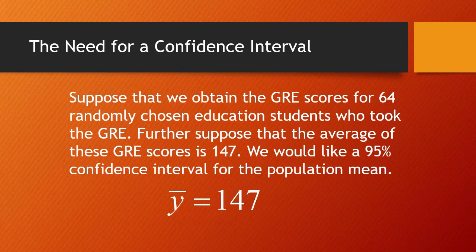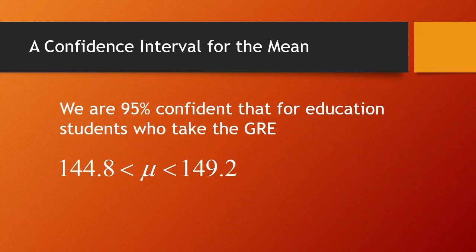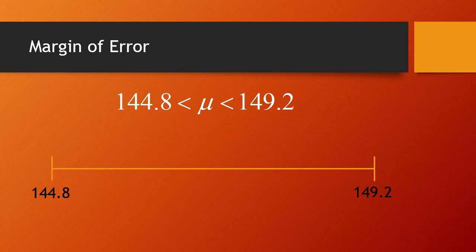We would like a 95% confidence interval for the population mean. This is an example from past videos where we created a confidence interval. We are 95% confident that for education students who take the GRE, the population mean is between 144.8 and 149.2.